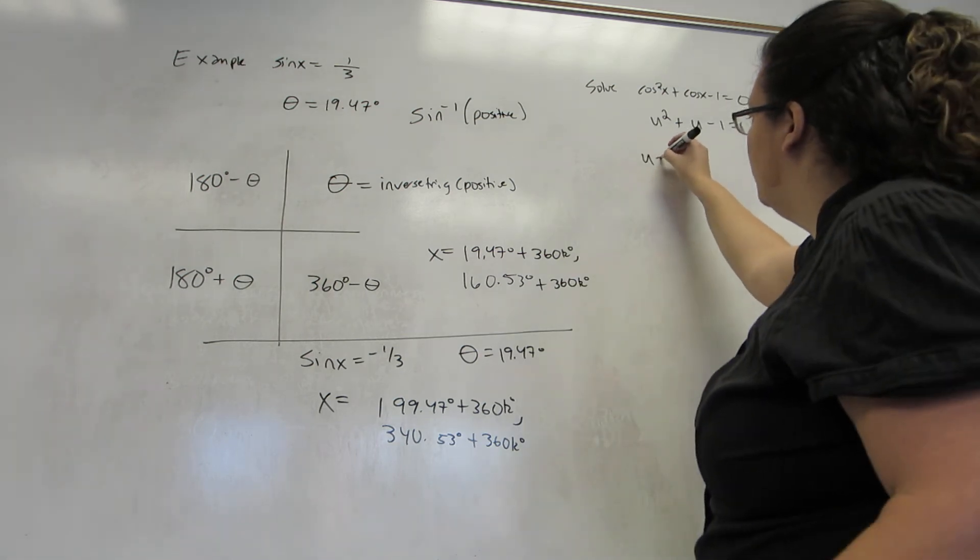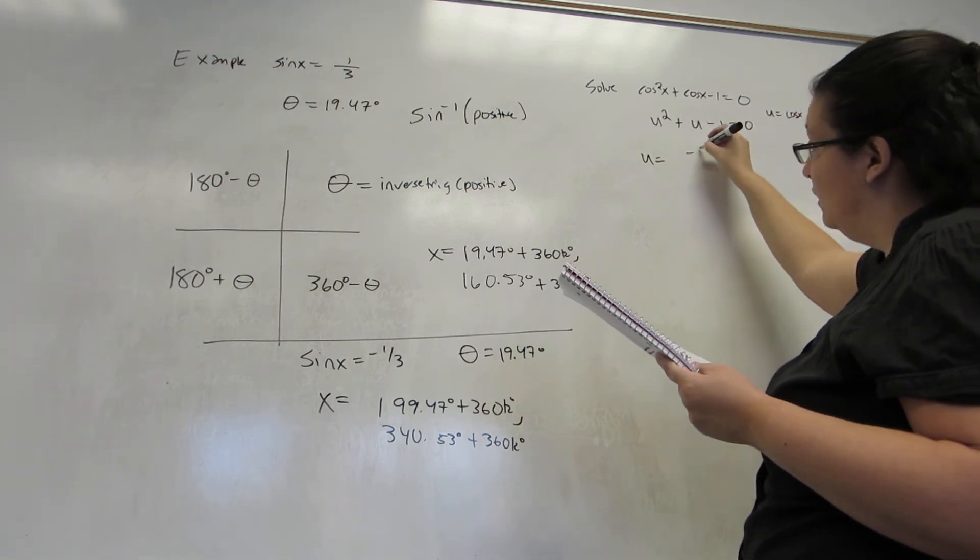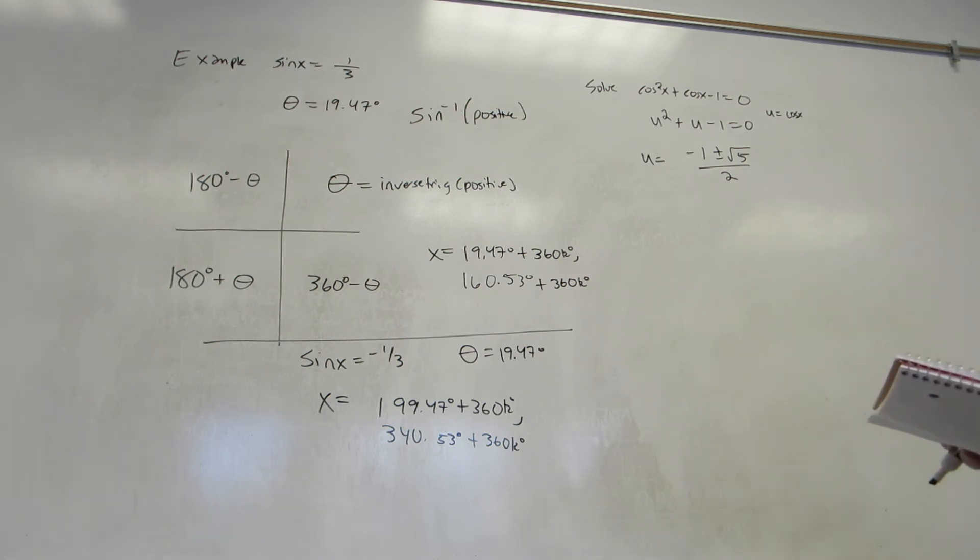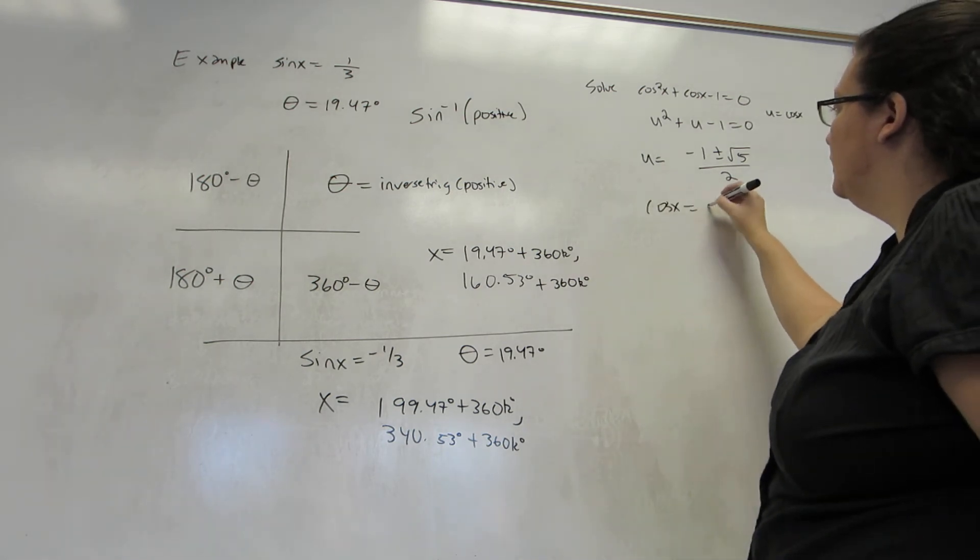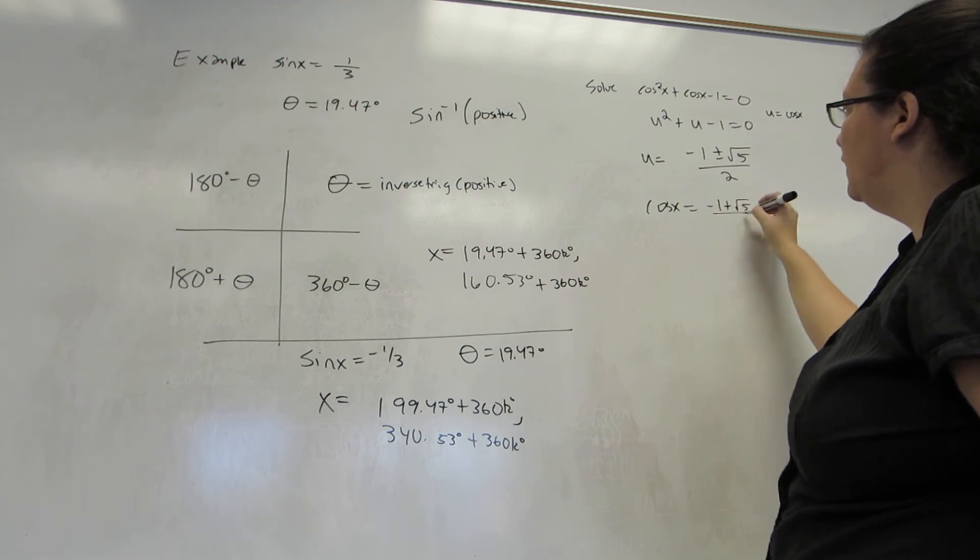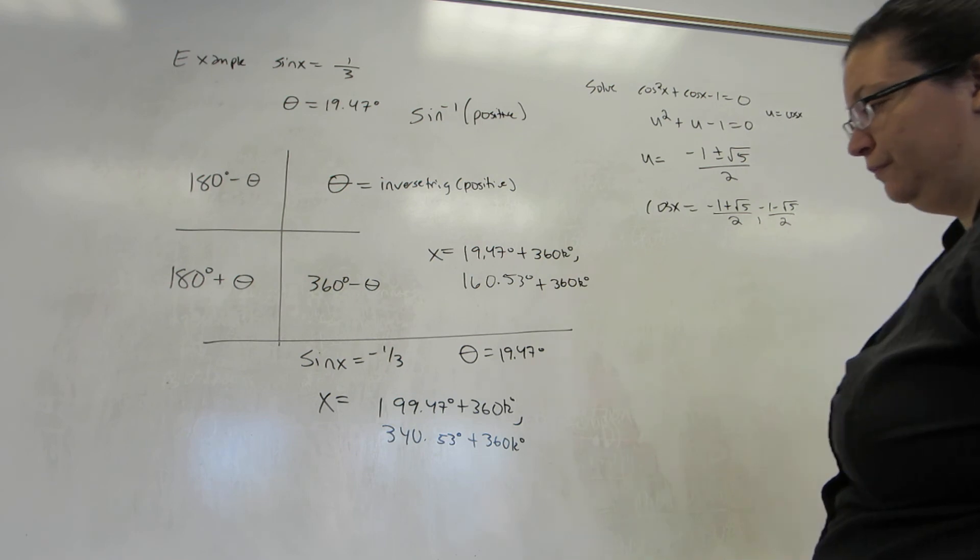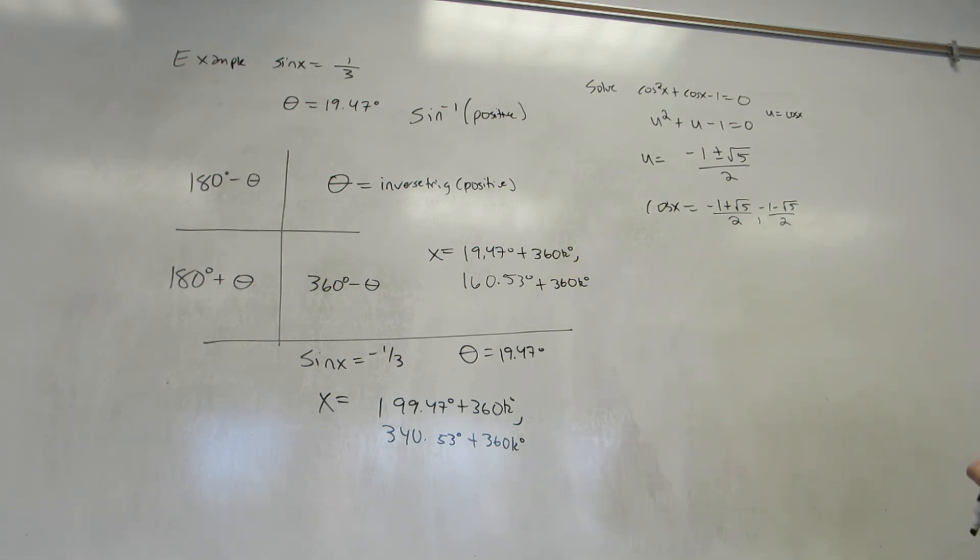Then you would use the quadratic formula and arrive at this answer. Now, this means that cosine of x is negative 1 plus the square root of 5 over 2 or negative 1 minus the square root of 5 over 2. Two possible answers, and I've reached my first goal. So, clearly, they're not unit circle values.